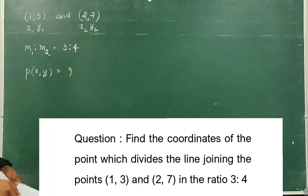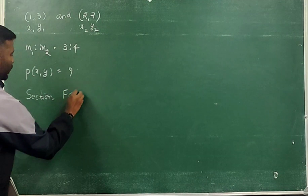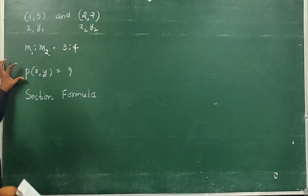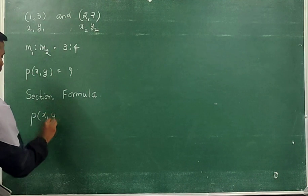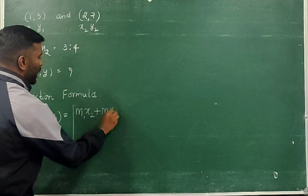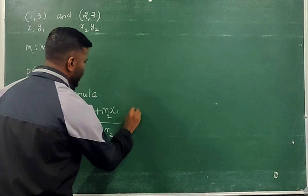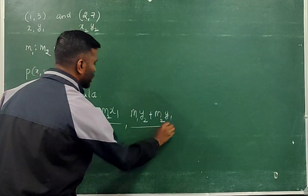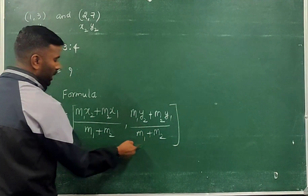To find the point, we should use the section formula. The section formula is used to find the point which divides a line segment in a given ratio. The formula is: P(x, y) = ( m1·x2 + m2·x1 ) / (m1 + m2), and the y-coordinate is ( m1·y2 + m2·y1 ) / (m1 + m2). In the x-coordinate we use x2 and x1; in the y-coordinate we use y2 and y1.